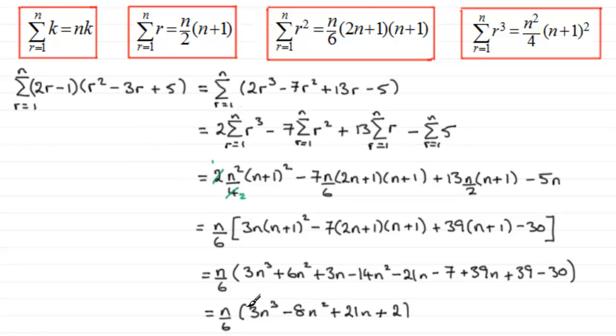And if you were to substitute n equals 3 into here, you should find you get 37 again, verifying that there's every chance that you're correct.